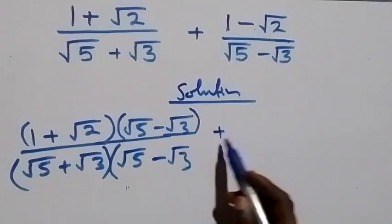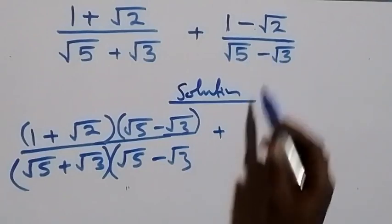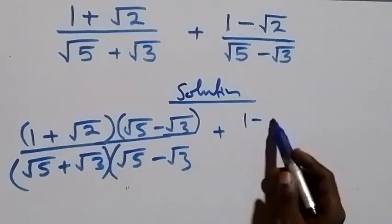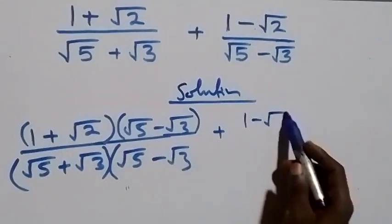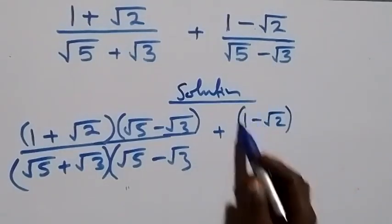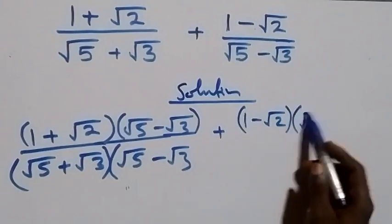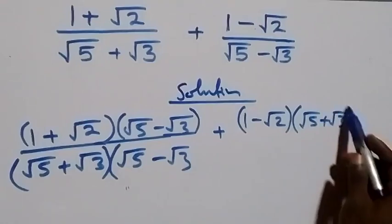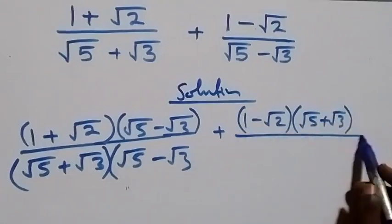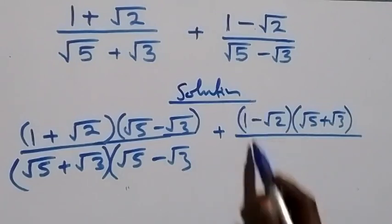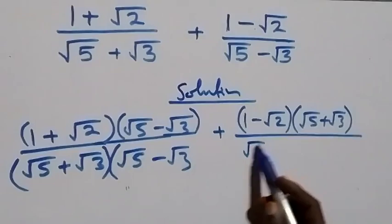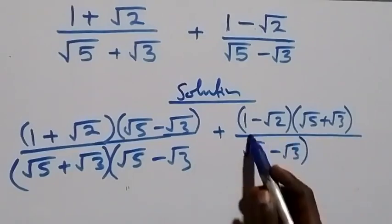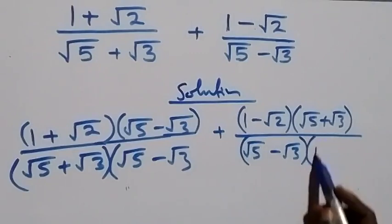Then for the second fraction, we rationalize by multiplying with its conjugate. The numerator factor is (1 − √2) and we multiply the denominator by the conjugate (√5 + √3), and also by (√5 − √3).